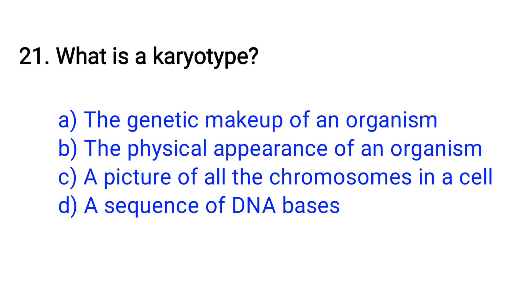Question number 21. What is a karyotype? Option A: The genetic makeup of an organism, B: The physical appearance of an organism, C: A picture of all the chromosomes in a cell, D: A sequence of DNA bases. The right answer is Option C: A picture of all the chromosomes in a cell.